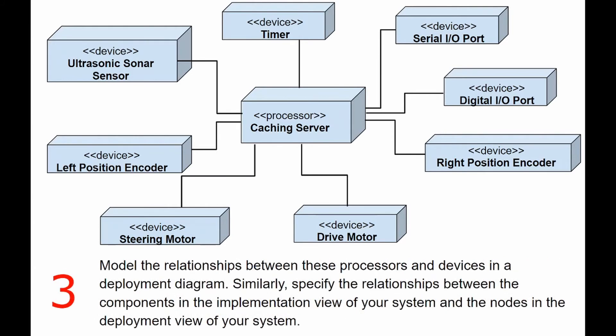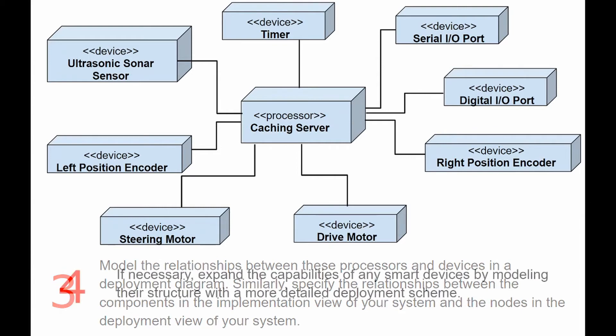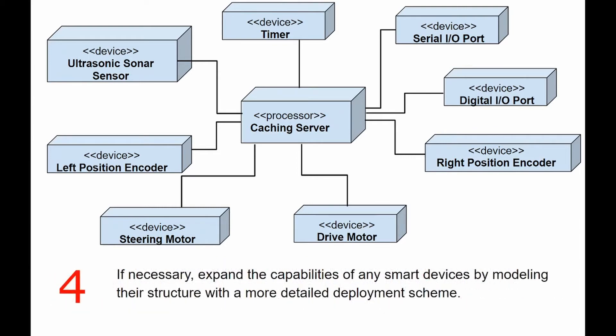Model the relationships between these processes and devices in a deployment diagram. Similarly, specify the relationships between the components in the implementation view of your system and the nodes in the deployment view of your system. If necessary, expand the capabilities of any smart devices by modeling their structure with a more detailed deployment scheme.